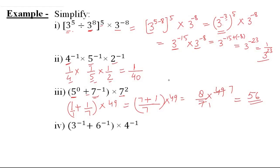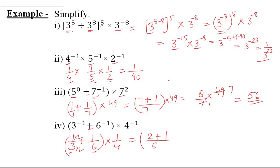Fourth: No laws apply because there is a plus sign in between — plus sign cases have no law. So we write: 1 upon 3 plus 1 upon 6, bracket multiplied by 1 upon 4. First solve the bracket by taking LCM of 3 and 6, which is 6. Multiply numerator of the first fraction by 2: we get 2 plus 1 upon 6, which is 3 upon 6. Multiplied by 1 upon 4 gives 3 upon 24, which reduces to 1 upon 8. That is the final answer.